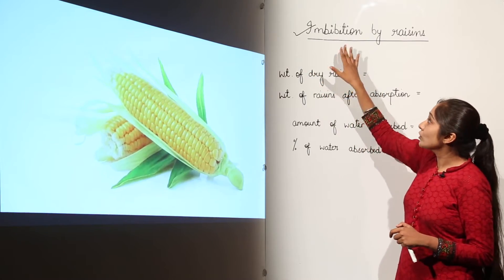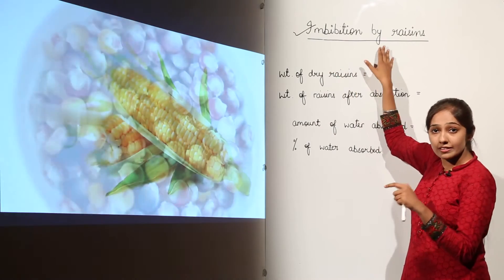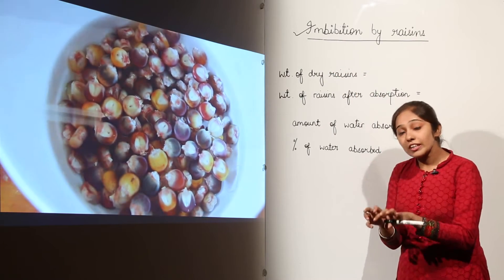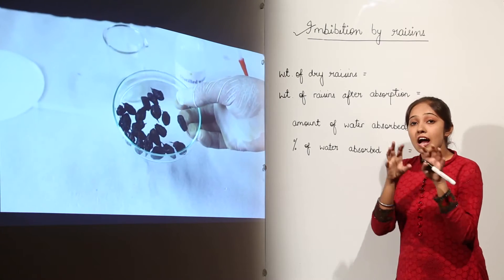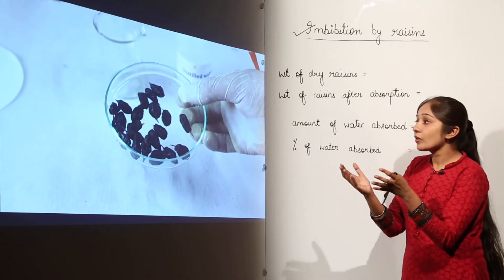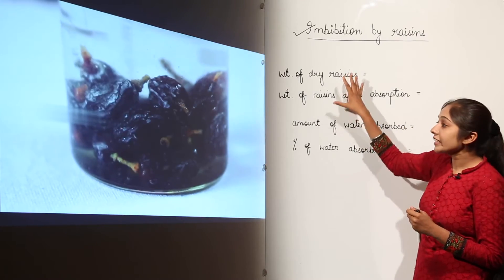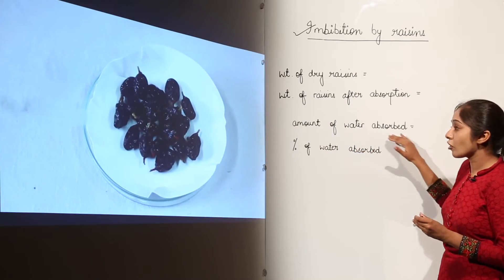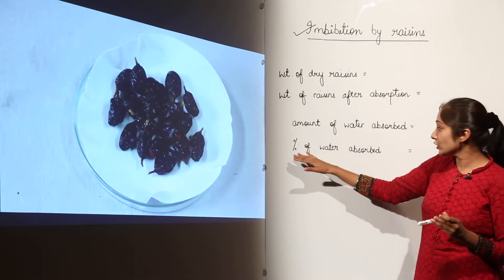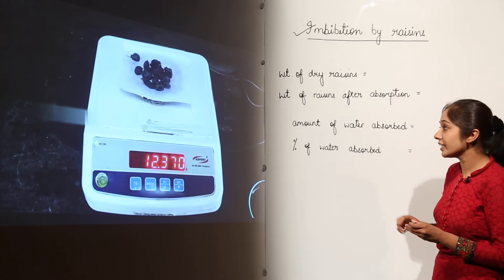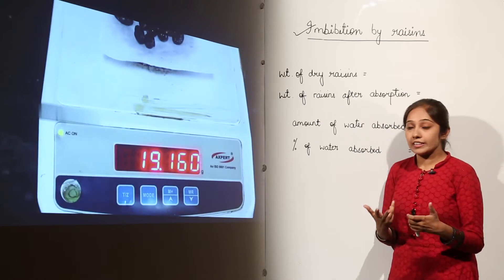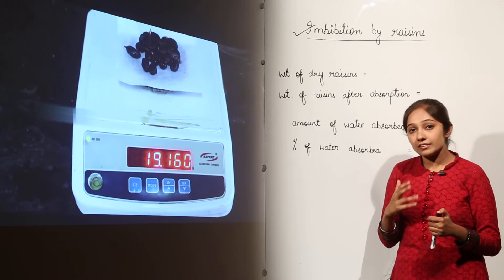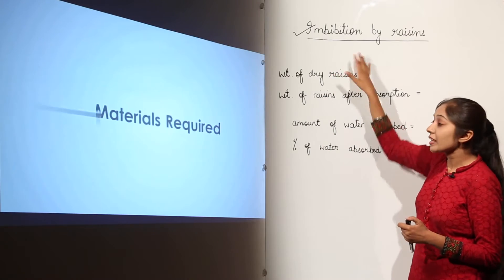We are going to talk about imbibition in the case of raisins. There needs to be a hydrophilic colloid — such as starch or cellulose — which will absorb water. We will perform this activity with raisins to find out the amount of water absorbed and the percentage of water absorbed. Let us discuss the materials required for this activity.